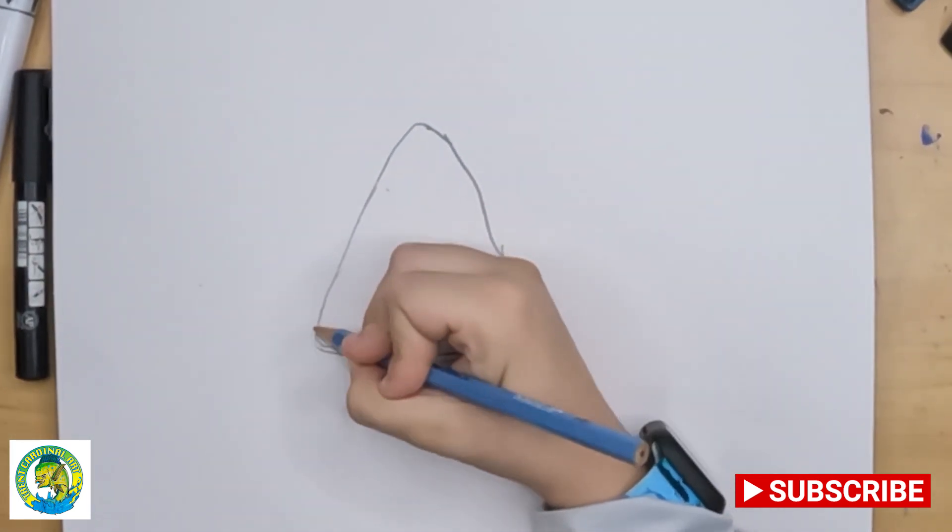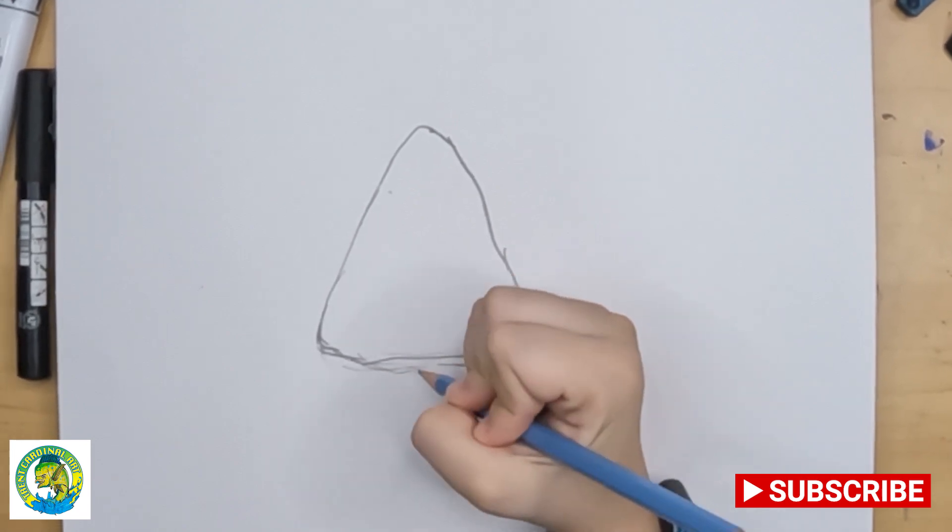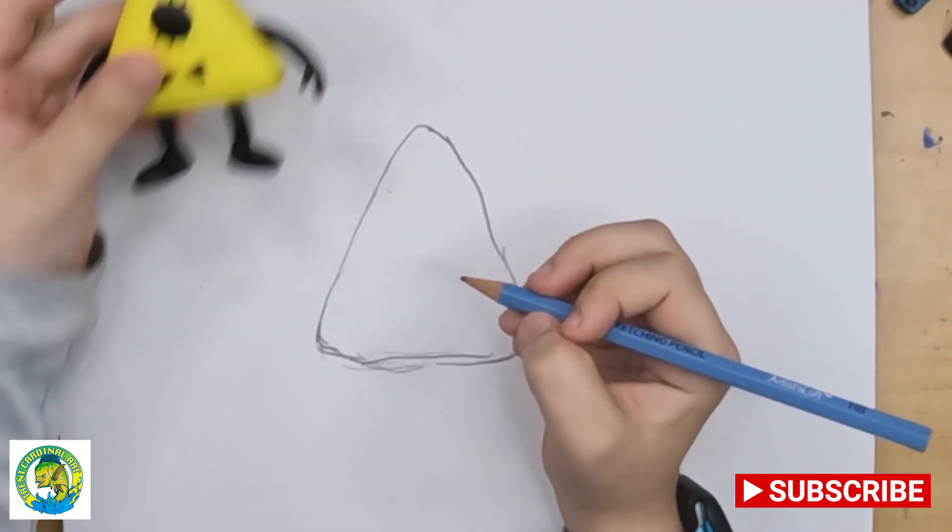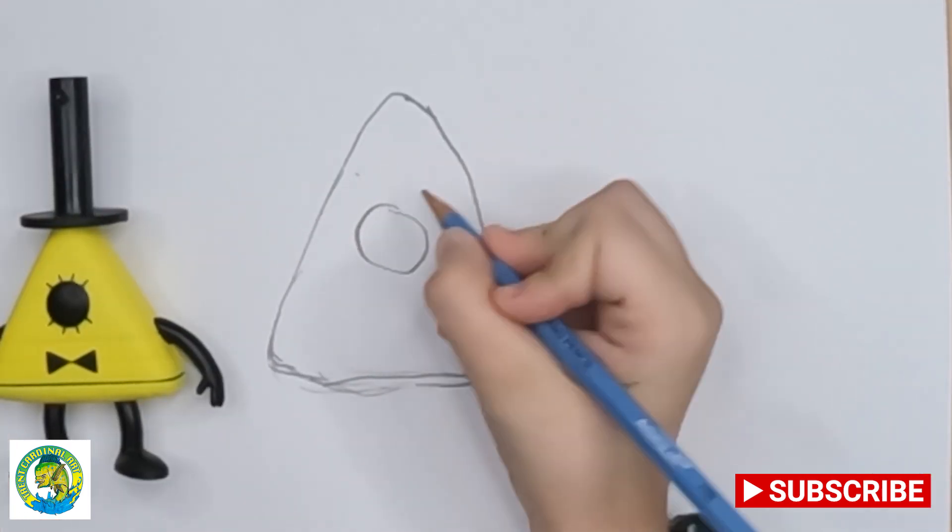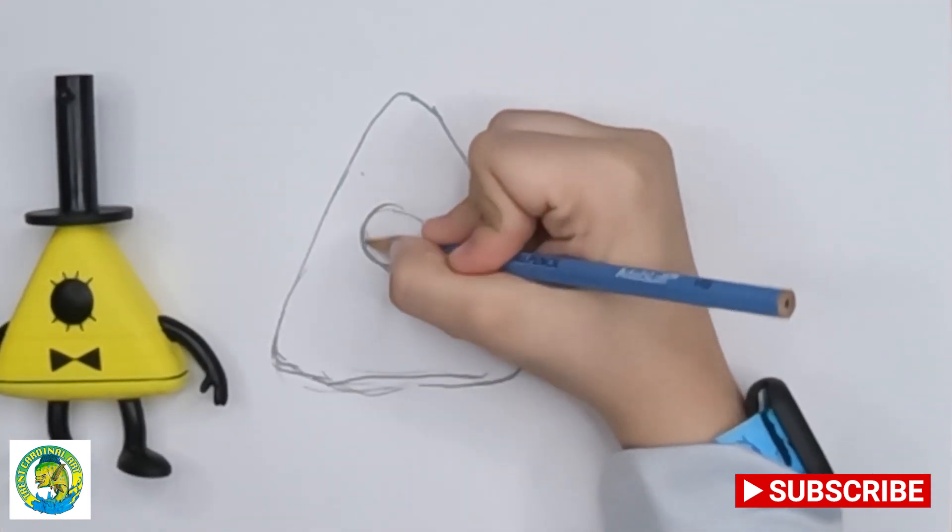So once we're done with the triangle, we're going to make his eye. We're going to do a circle. And you can color if you want.